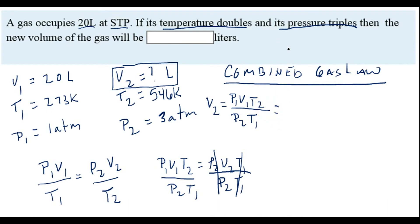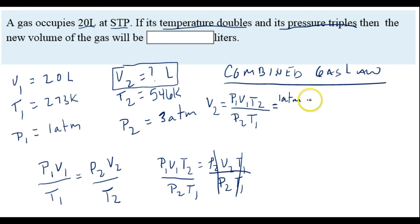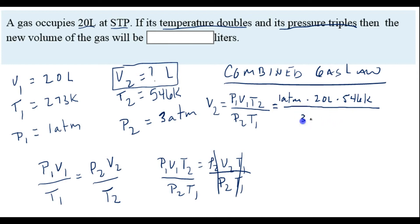Before plugging numbers into this formula, we need to make sure that the pressure units are the same — they're both in atmospheres — and that the temperature units are in Kelvin, which they are. So P1 is 1 atm, V1 is 20 liters, T2 is 546 K. We're going to divide by P2 which is 3 atm times T1, which is 273 K. I like to put everything in the denominator in parentheses.